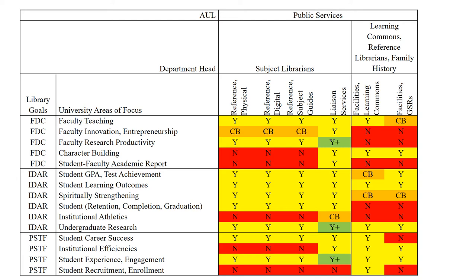In 2013, as part of our first library impact map assessment, we modified the original library impact map such that we connected library goals to each university area of focus, and designated departments, subject librarians, and divisions for each library service to allow further disaggregation.